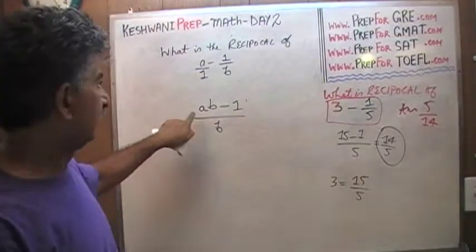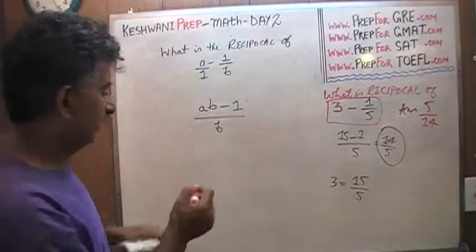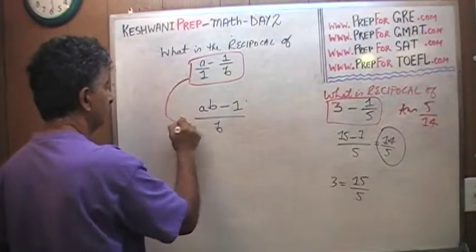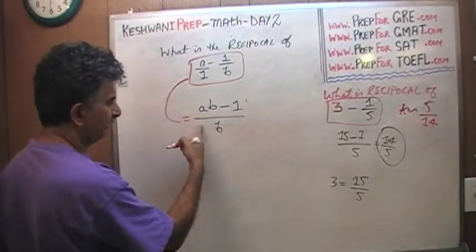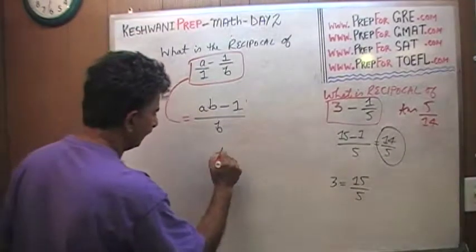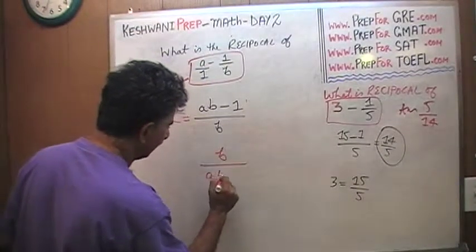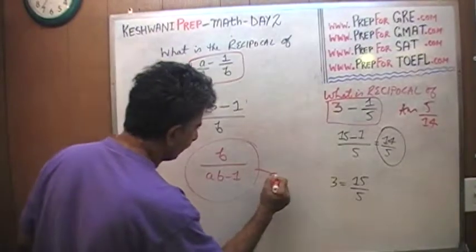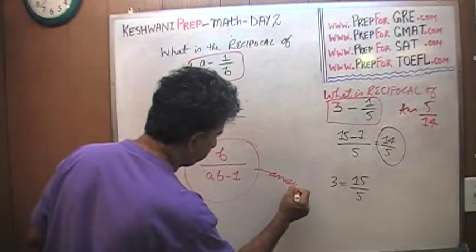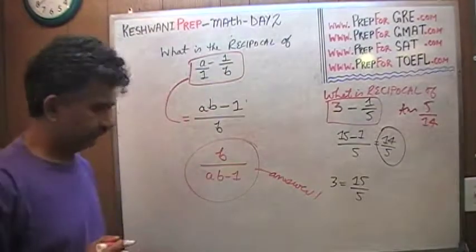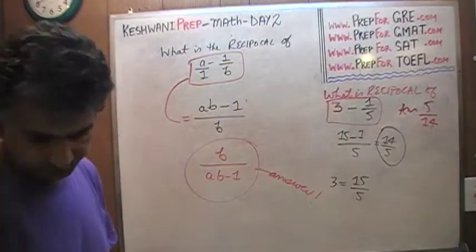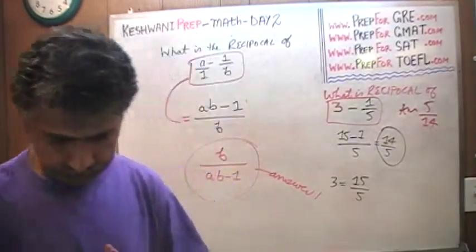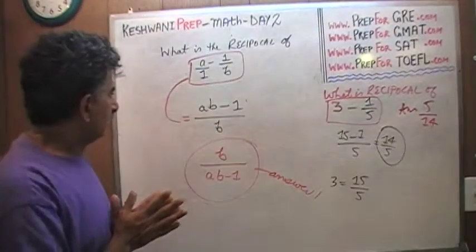The same exact thing is going on here. This quantity equals AB minus one over B, and therefore the reciprocal of this is B over AB minus one. And there is our answer. Voilà. That's all.